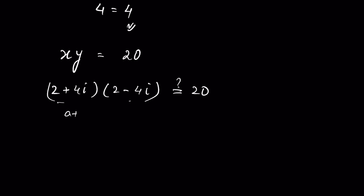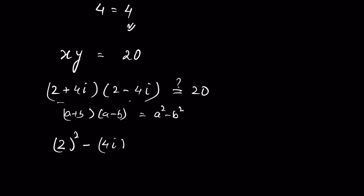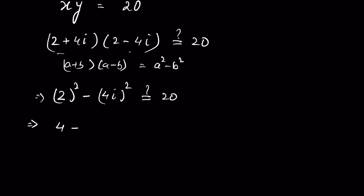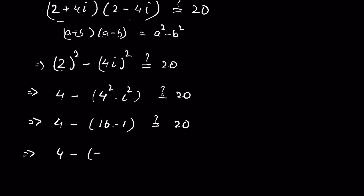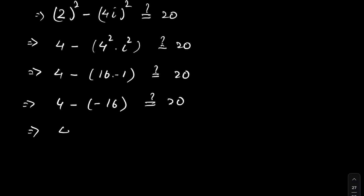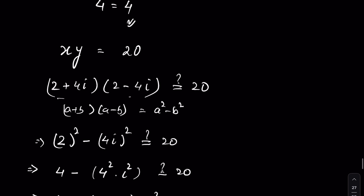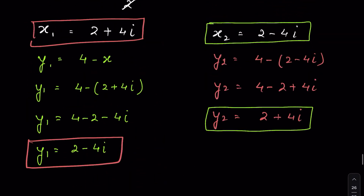This is in the form (a plus b)(a minus b), the difference of squares, so we write a squared minus b squared: 2 squared minus (4i) squared equals 4 minus 16i squared. Since i squared equals minus 1, this is 4 minus (minus 16), which equals 4 plus 16 equals 20 — LHS equals RHS, verified. In the same manner we can verify 2 minus 4i and 2 plus 4i, since just the signs have changed. Let me know in the comments how you solved it — thanks for watching.